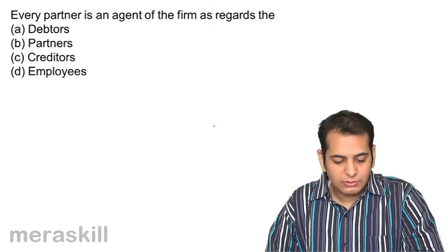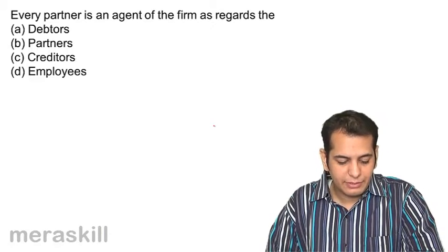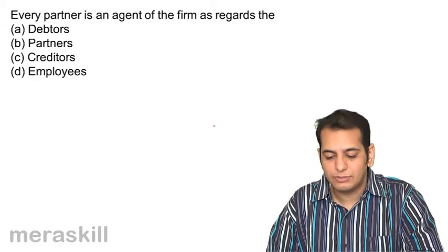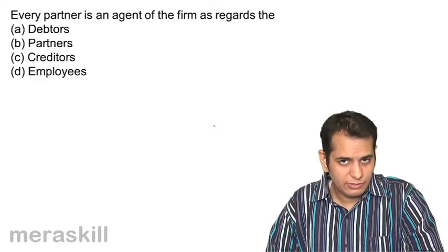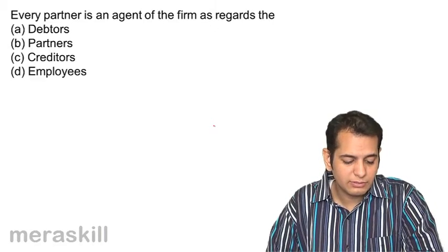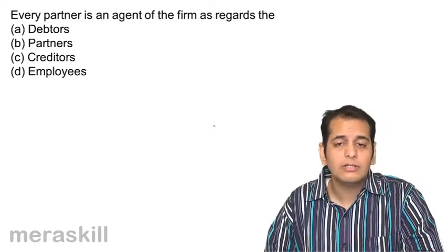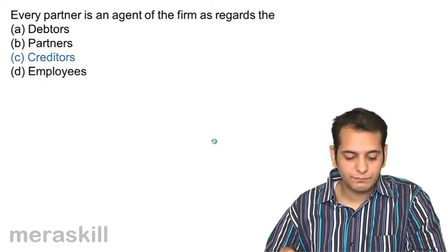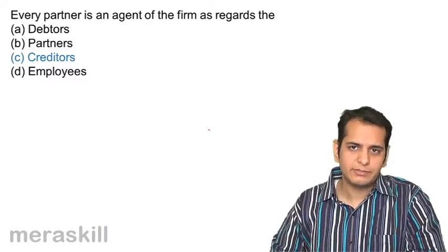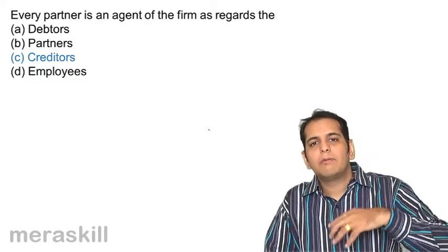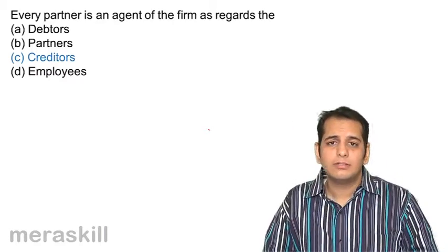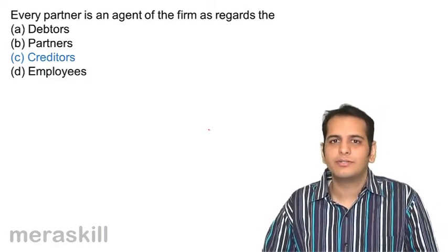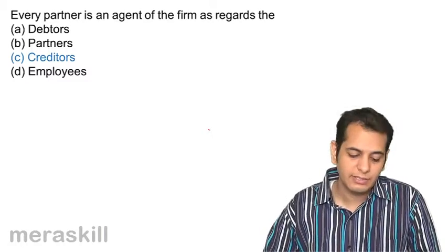Next question: every partner is an agent of the firm as regards: a) debtors, b) partners, c) creditors, or d) employees. The answer is creditors — that is, outsiders — because a partner has the power to bind the firm by his acts done with outsiders, including the liabilities he has taken on.